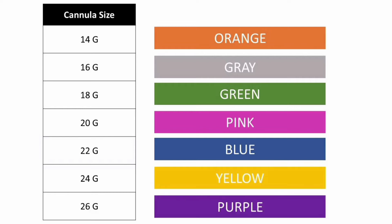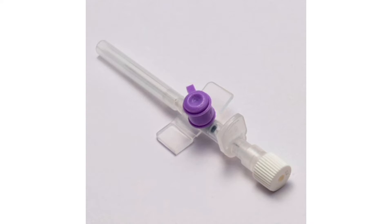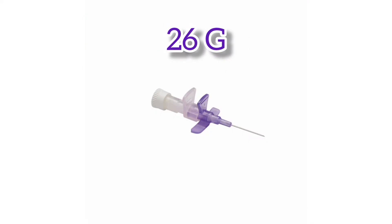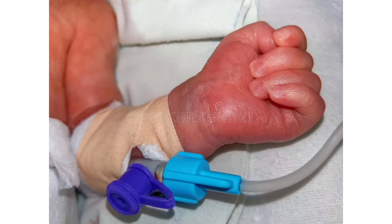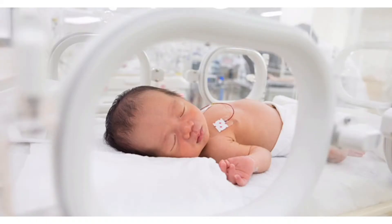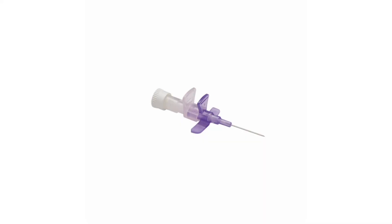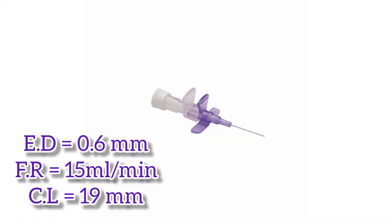We will start from the purple colored cannula having gauge 26, which is the highest number. You can predict that with higher gauge there is less external diameter and flow rate, making it best used in neonates and infants who require less flow rate. Its external diameter is 0.6 mm with a flow rate of 15 ml per minute.